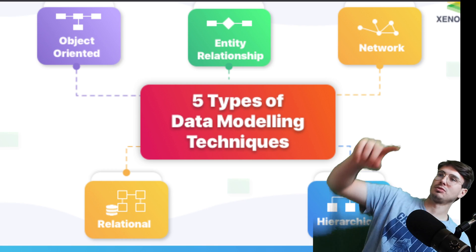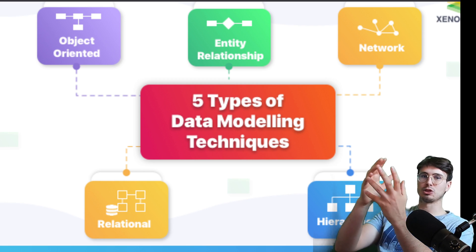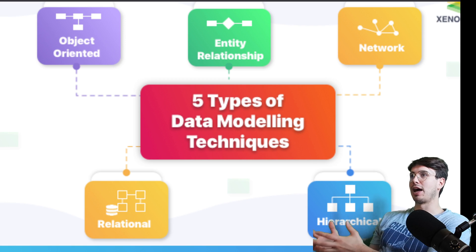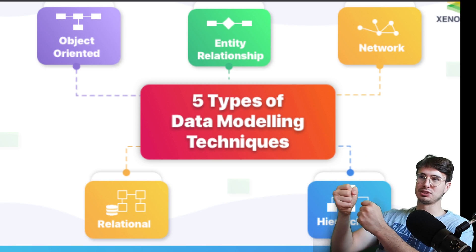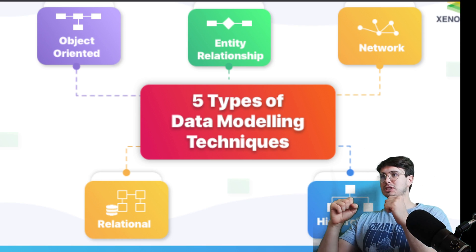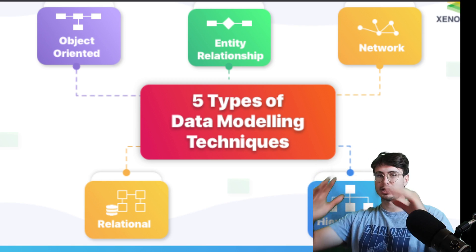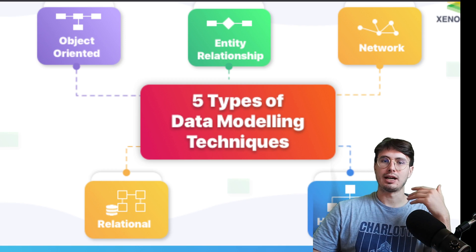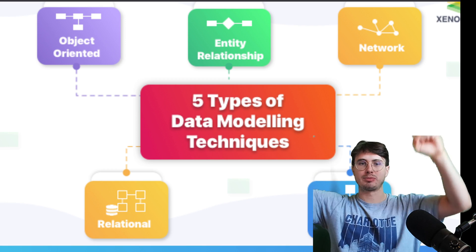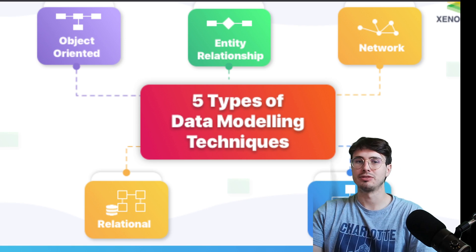Network data models are an extension of hierarchical data models, which use a tree-like structure where each record has a single parent and zero or several children. This was an earlier database system — like a leadership chart where each manager has several people under it. But it has limitations when representing many-to-many relationships. Network models solve this by allowing multiple parent records per child, enabling more complex relationships, though they're not very popular today.